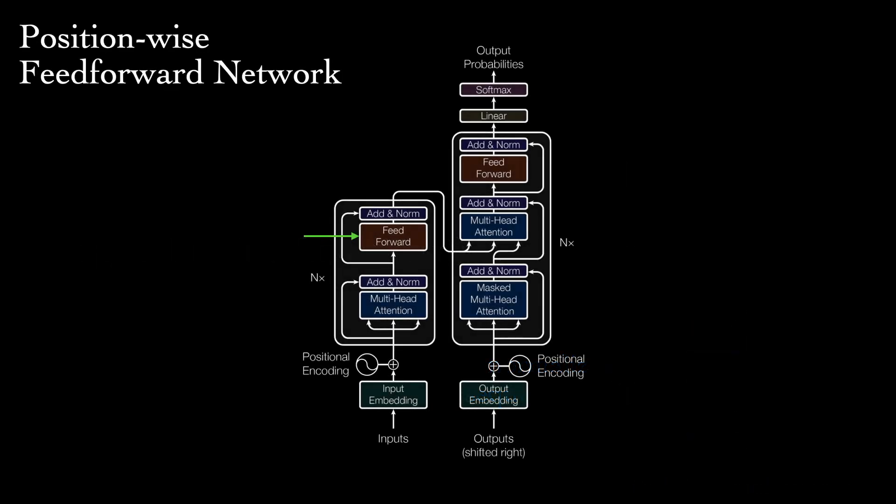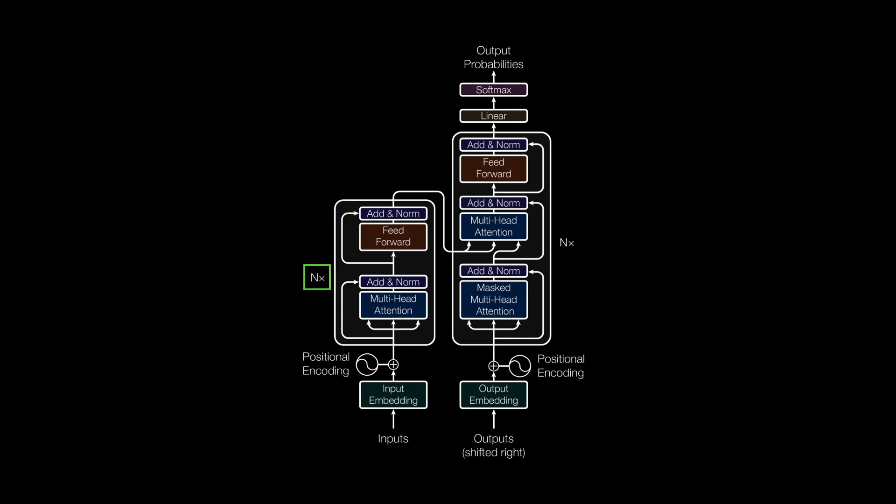The second sub-layer is a position-wise feedforward network. This applies a simple network of two fully connected layers with ReLU activation between them to each word representation. After this second sub-layer, we again apply a residual connection and layer normalization. So we've finished walking through one encoder layer. We can stack these up N times to form the full encoder. The end result is a fixed-length vector representation for each word, except now these representations consider the full context of the sequence, unlike the original input embeddings.